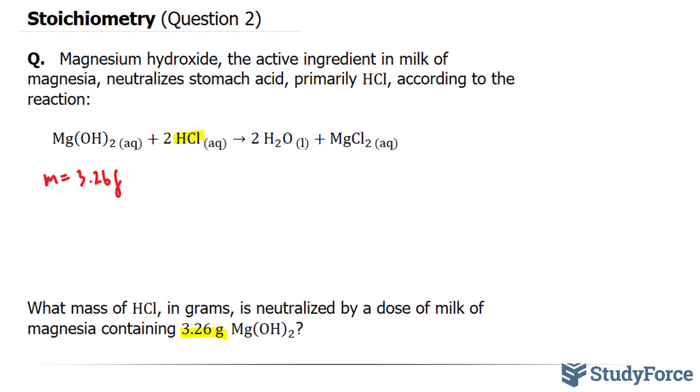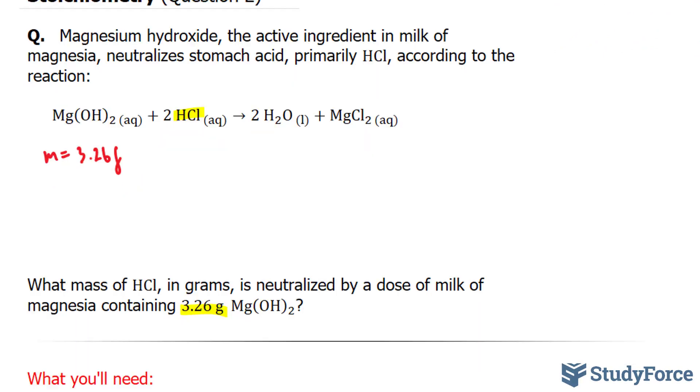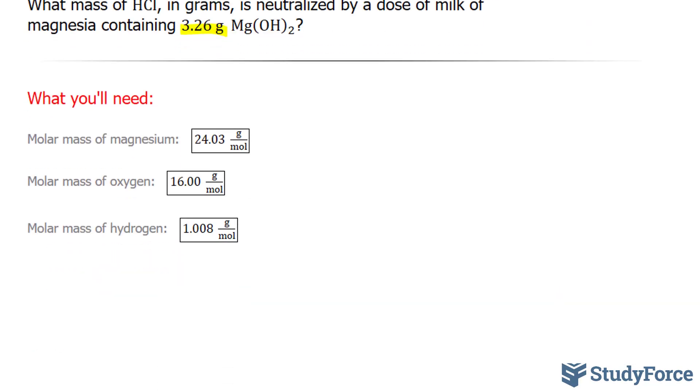The first thing we have to do here is find the molar mass of Mg(OH)2. We can do that using the molar masses found on the periodic table for each atom. We have Mg(OH)2, so we'll take this number, multiply it by 2 times 16, plus 2 times 1.008. Let's write that down for reference.